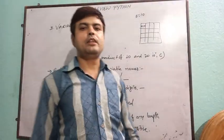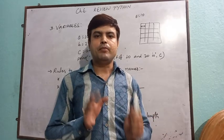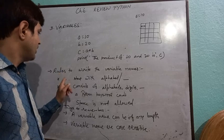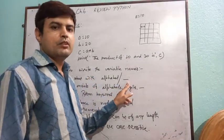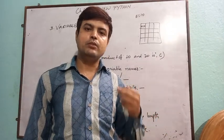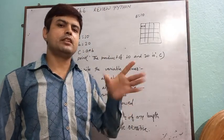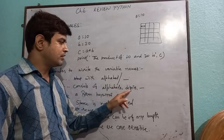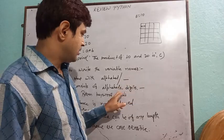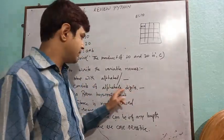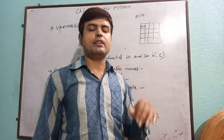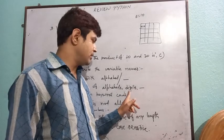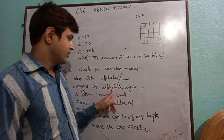Now, where we give a name to a variable, we must keep something in mind. There is a fixed rule to write a variable name. First, a variable name must start with an alphabet or underscore. Whenever we declare a variable, it must start with any alphabet — whether small or capital case — or underscore. Next, a variable name consists of alphabets, digits, or underscore. Other than these, we can't use any other special characters like percent, dollar, or asterisk in a variable name.